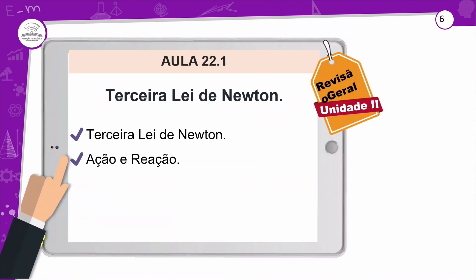Vamos para a aula 22.1, que trabalhou a terceira lei de Newton — a ação e a reação. Pelo princípio da inércia, ele vai continuar em repouso ou em movimento retilíneo uniforme, a não ser que uma força externa atue para tirar ele daquele estado de equilíbrio. Pela terceira lei, quando a gente tem essa interação, essa interação é força. Uma ação tem uma reação que tem a mesma direção, sentido oposto e mesma intensidade.